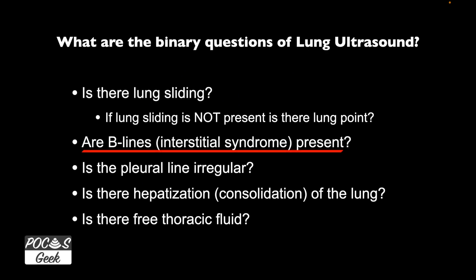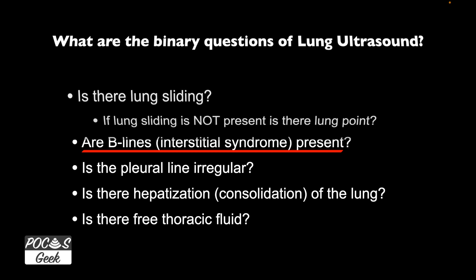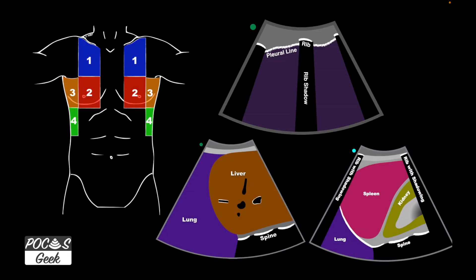If you haven't had a chance to watch the other lung ultrasound video covering anatomy and looking for lung sliding, I'll put a link in the corner — I suggest you do that first. We're going to go through each of these binary questions and give examples. In this video, we're specifically going to talk about whether B-lines are present, which represents interstitial syndrome. We have four zones of the lung on both sides of the chest, and we need to go through all four zones.